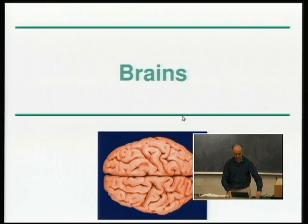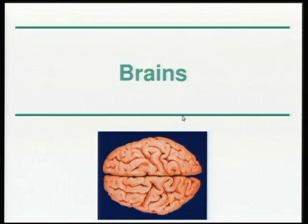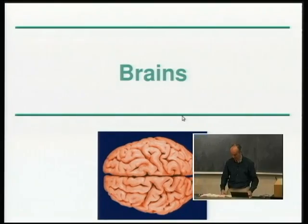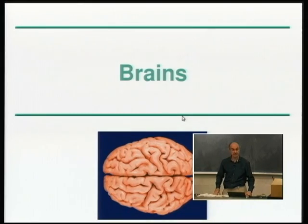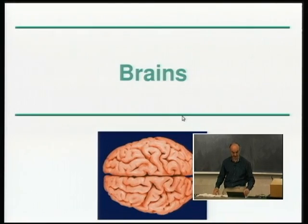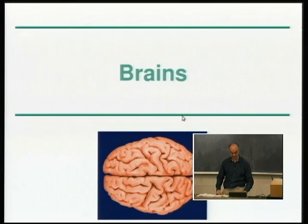I want to motivate why we should be interested in neural networks at all. I'll start by talking about brains, which is one of the motivations. We don't understand how brains work, and so it's interesting to look at theoretical models of them. Neural networks do have engineering applications as well, so even if you don't care about neuroscience, you might be interested in solving machine learning problems using neural net approaches.